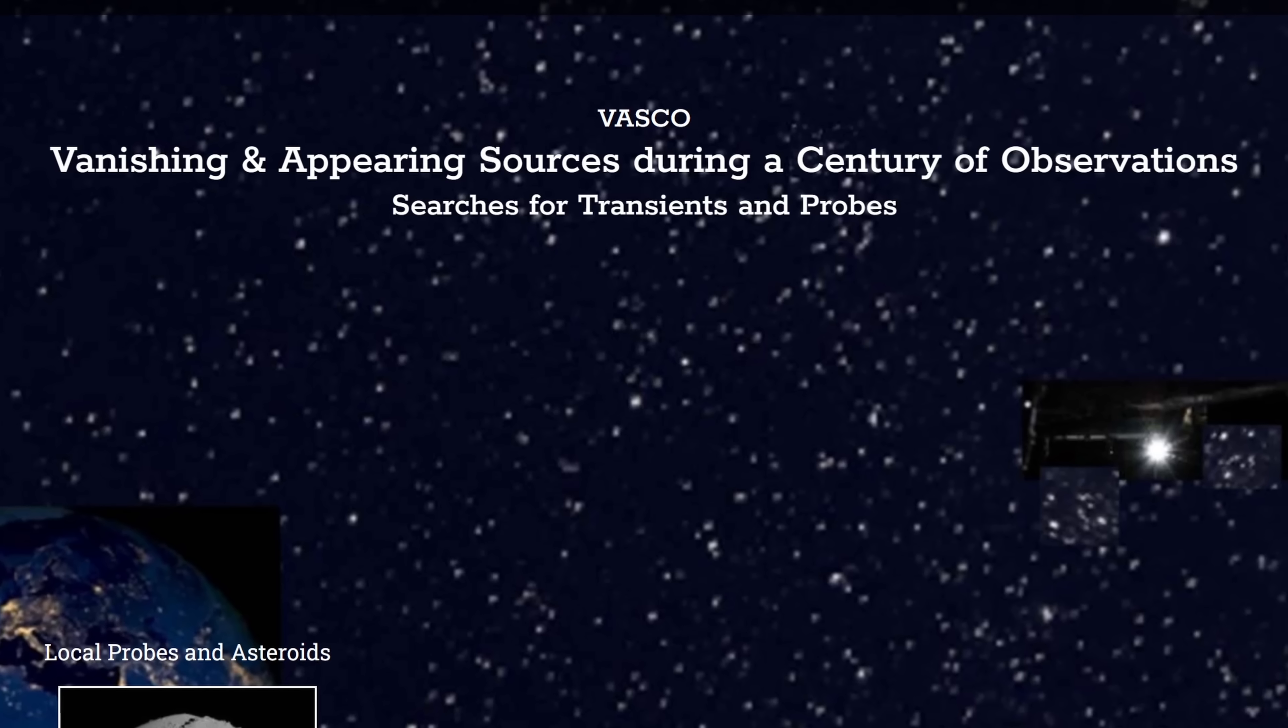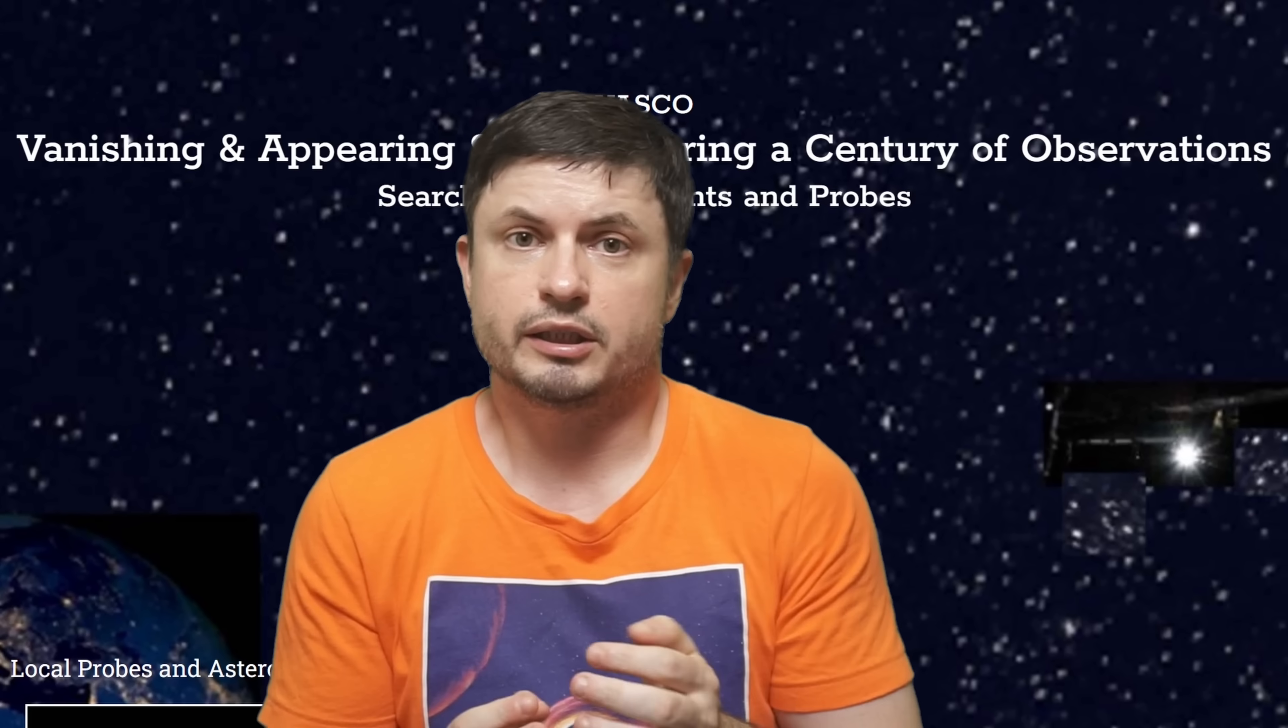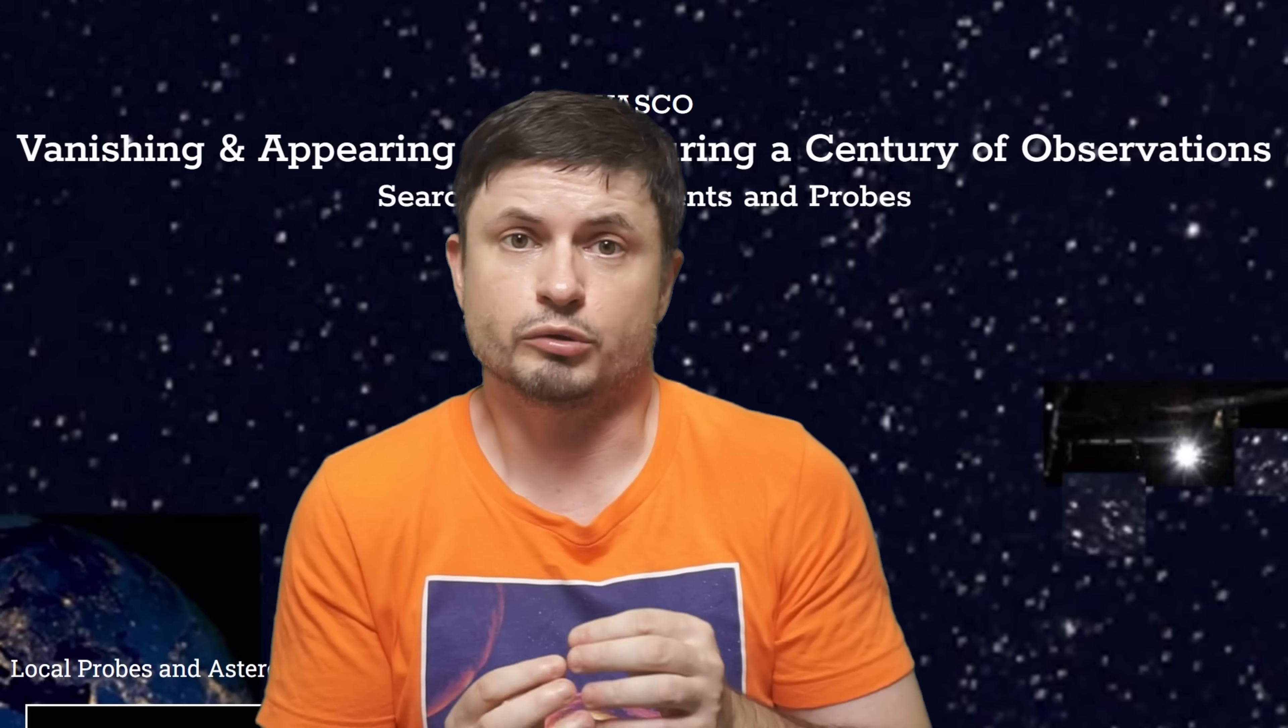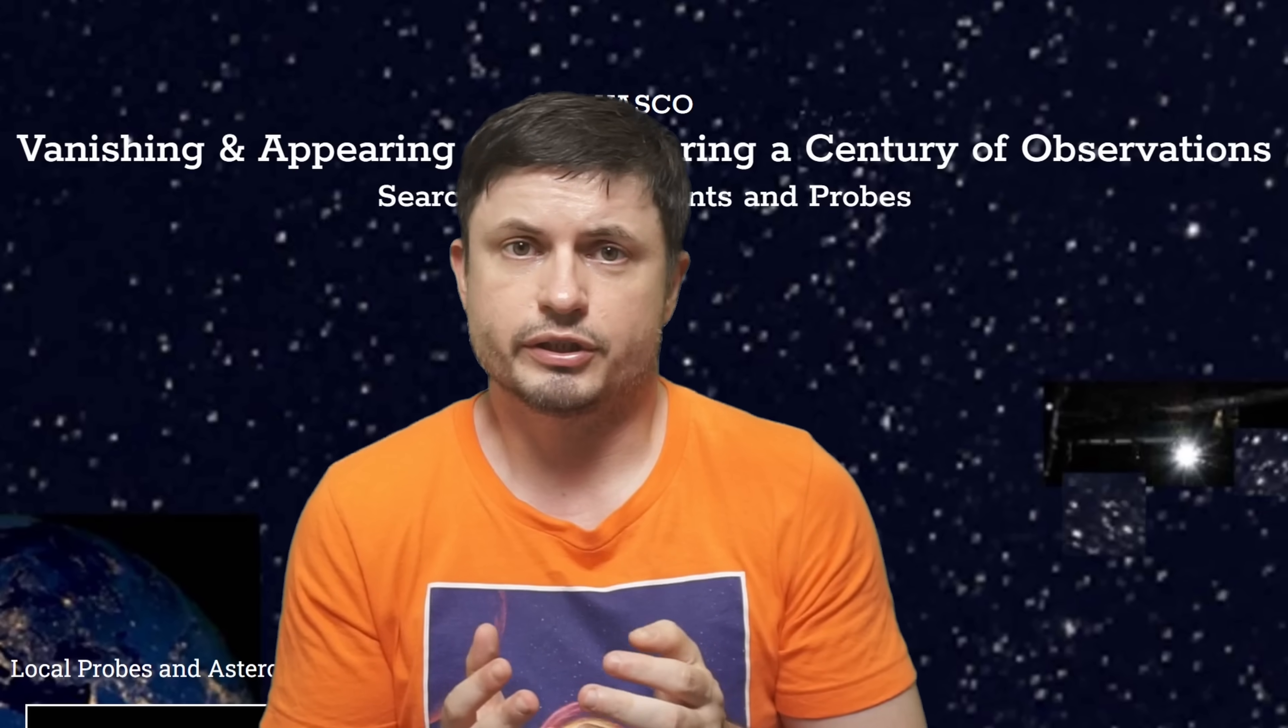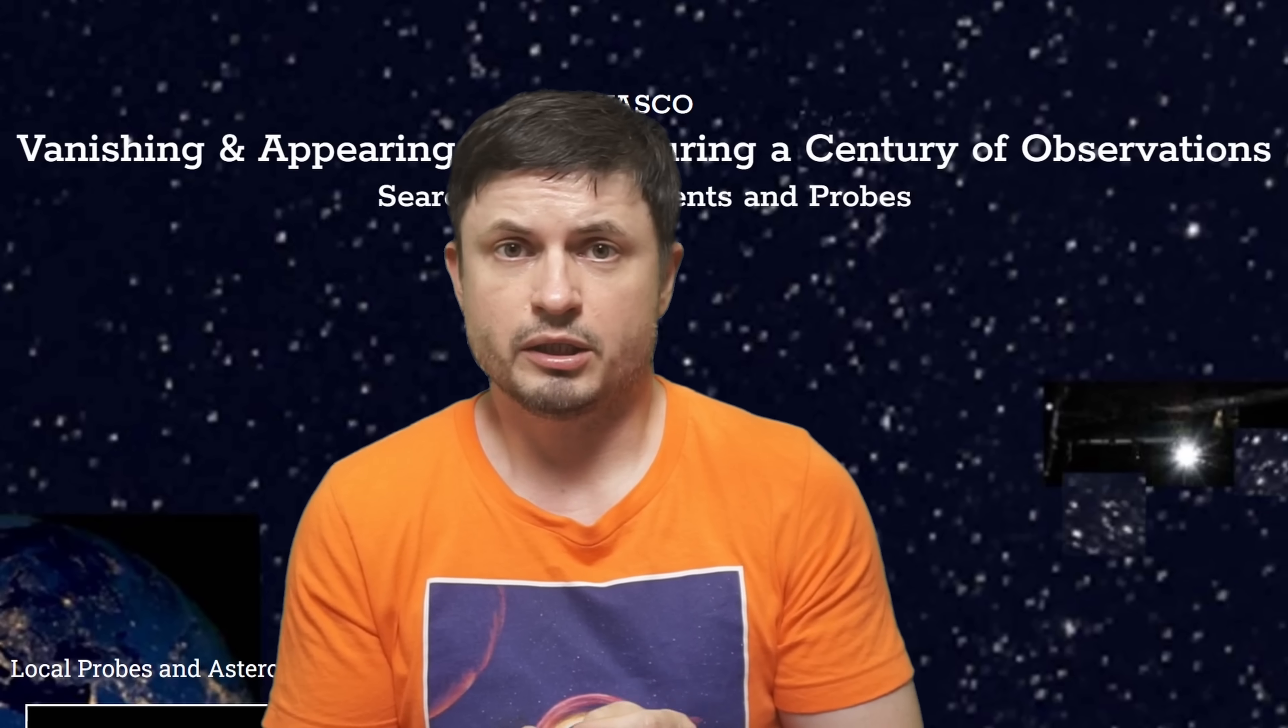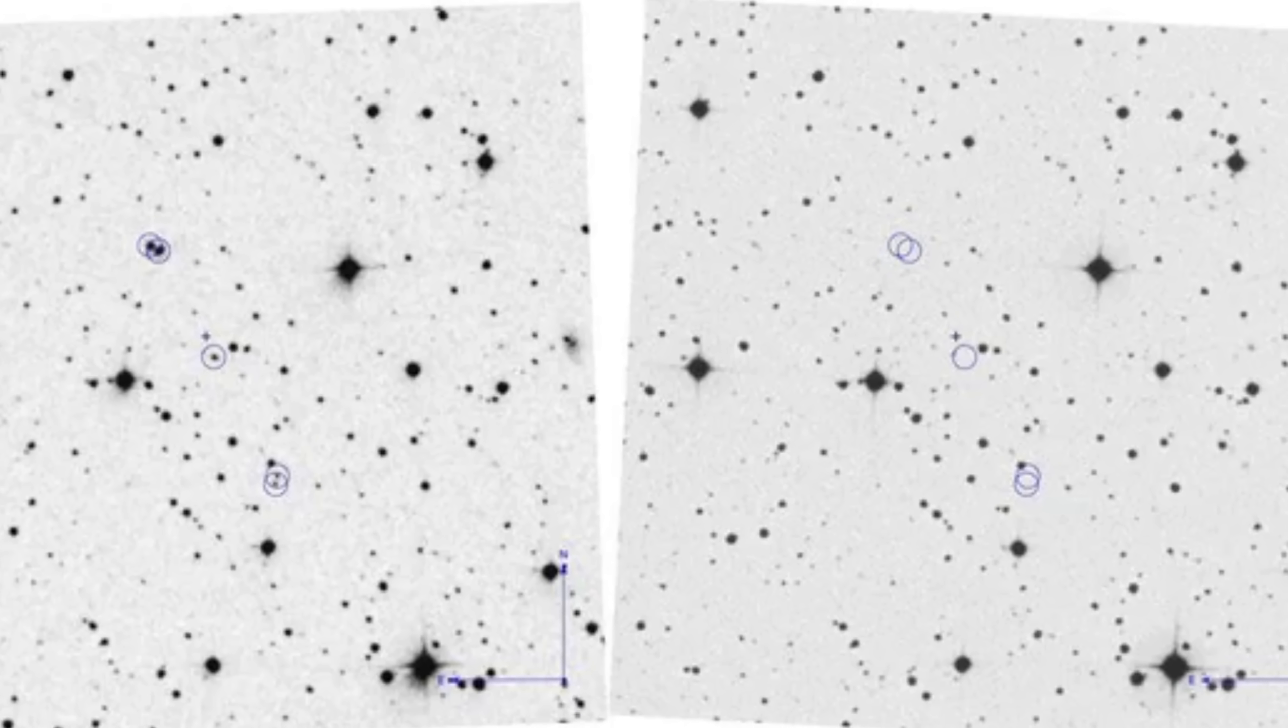In this video, we're going to explore some of the recent discoveries from a somewhat ambitious international project known as VASCO, Vanishing and Appearing Sources during a Century of Observations. A project that's trying to answer a somewhat simple question: what if something in our night skies vanished? Or even more strangely, what if something appeared out of nowhere, only to disappear once again?